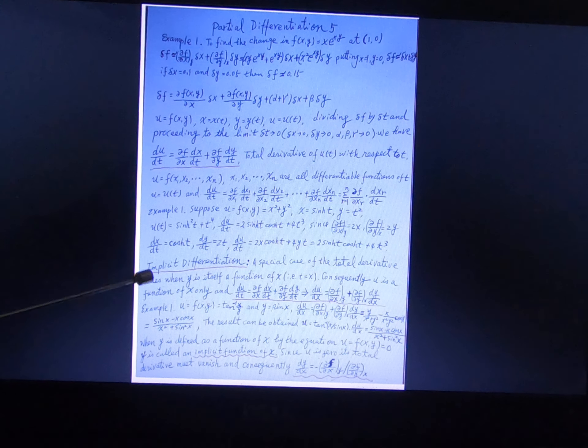Implicit differentiation: when a function is implicit — an implicit function of x — this is what the property is. These are the examples.